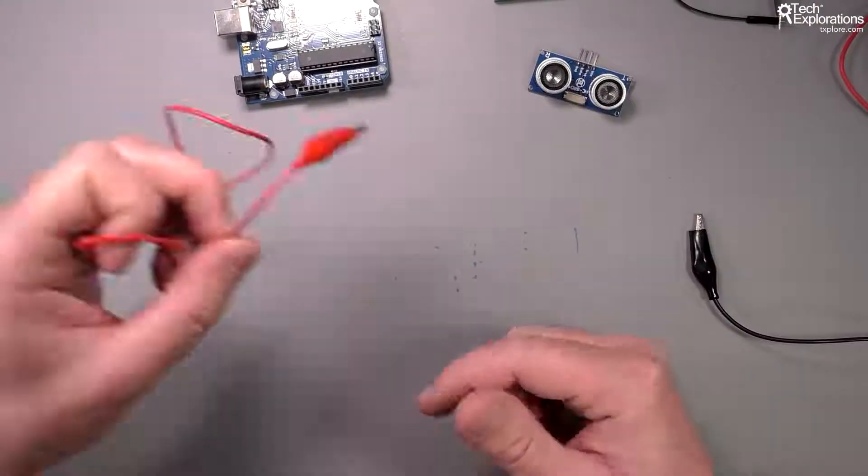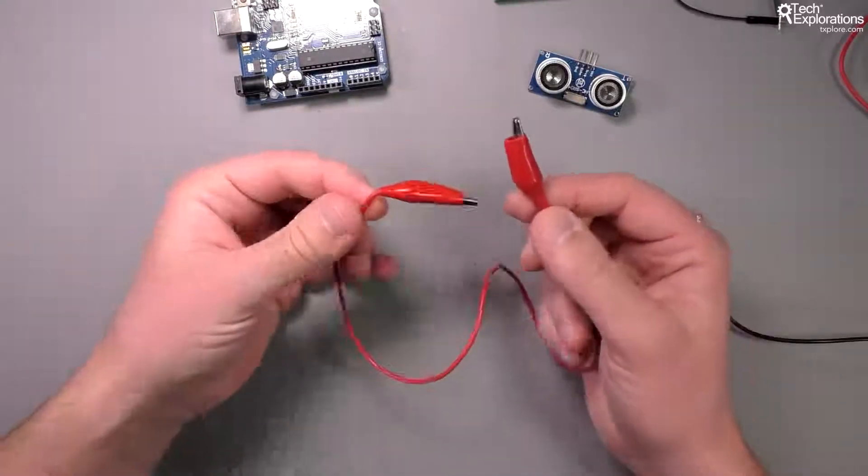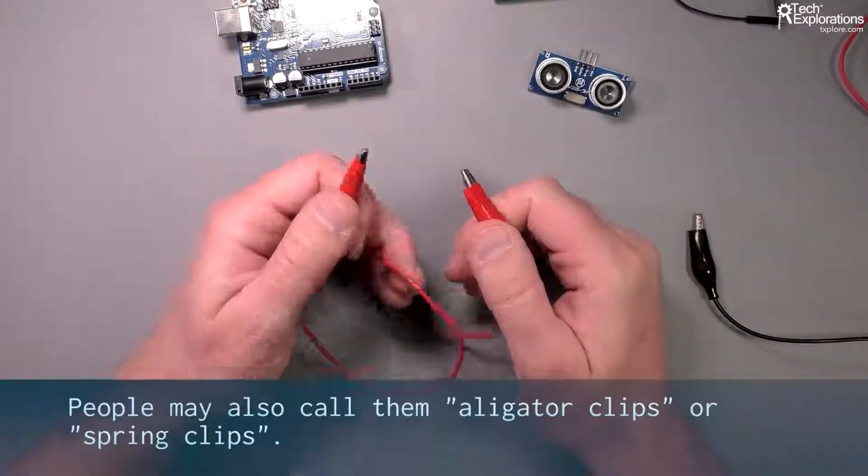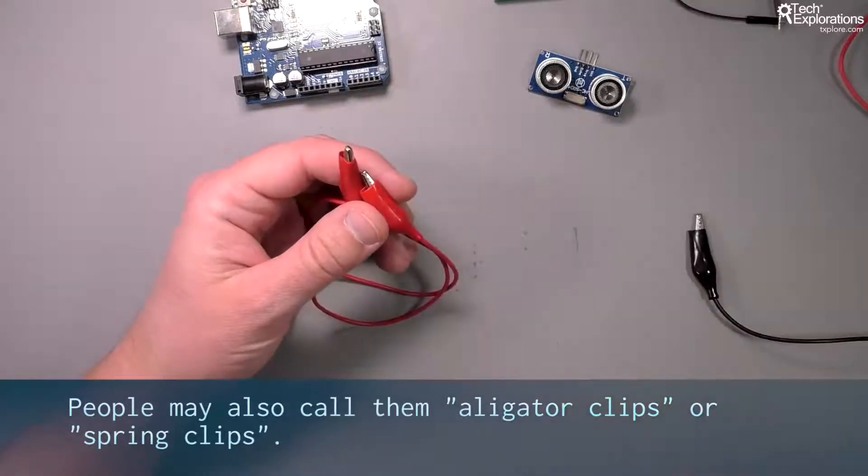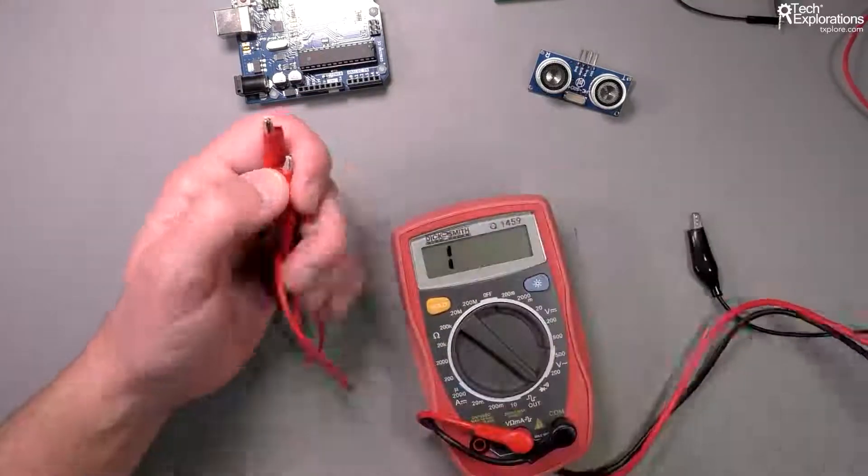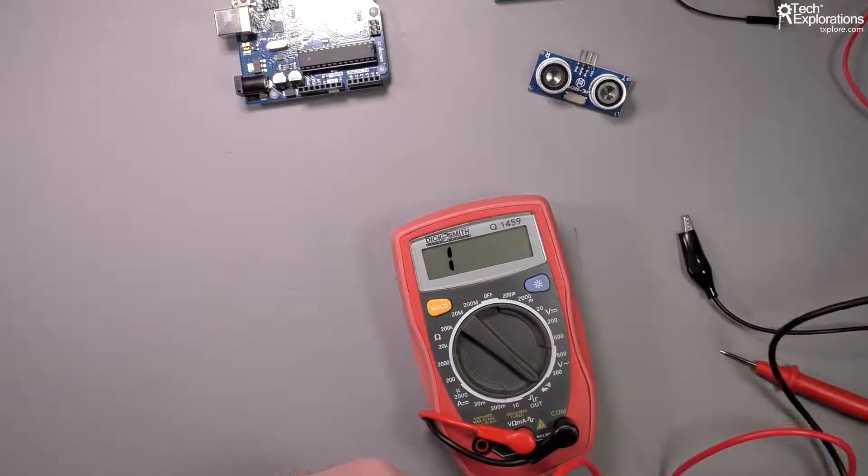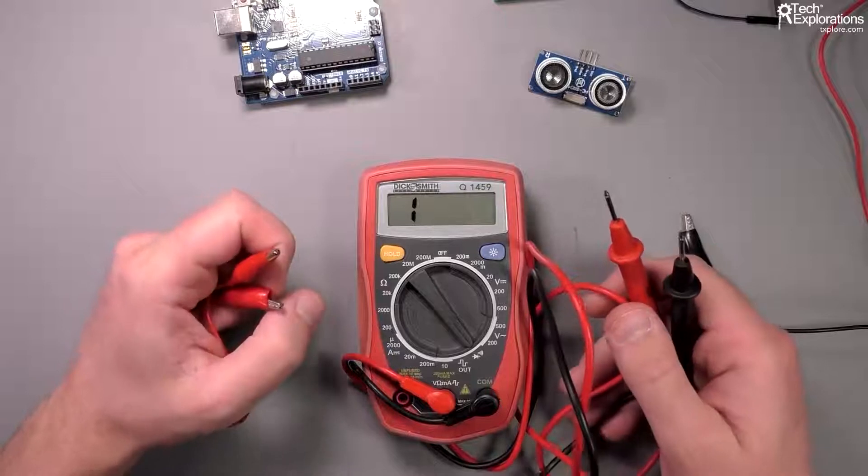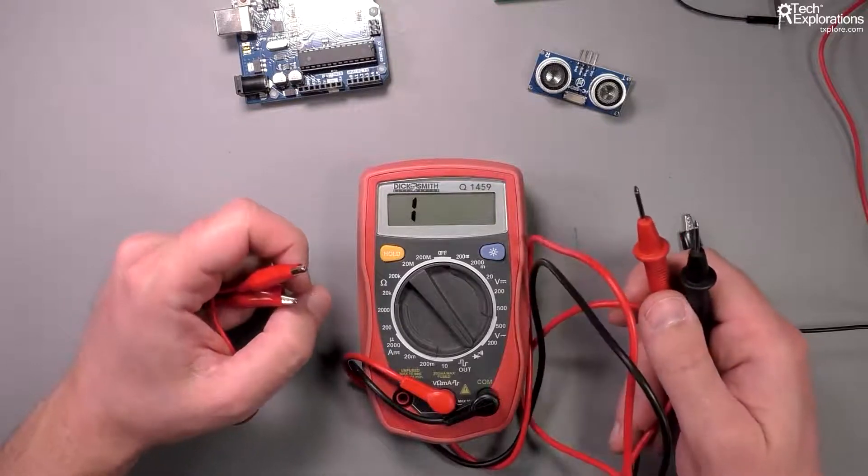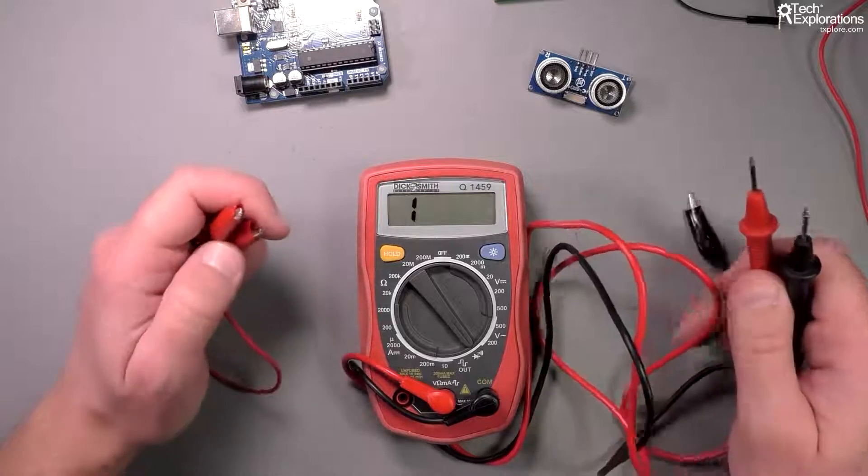Another type of jumper wire that you will need is this. We call these crocodile clips, and I find them very useful when I work with things such as a multimeter, for example. So let me show you. Here's a very simple multimeter, and I also have a lecture on multimeters later on in this section.